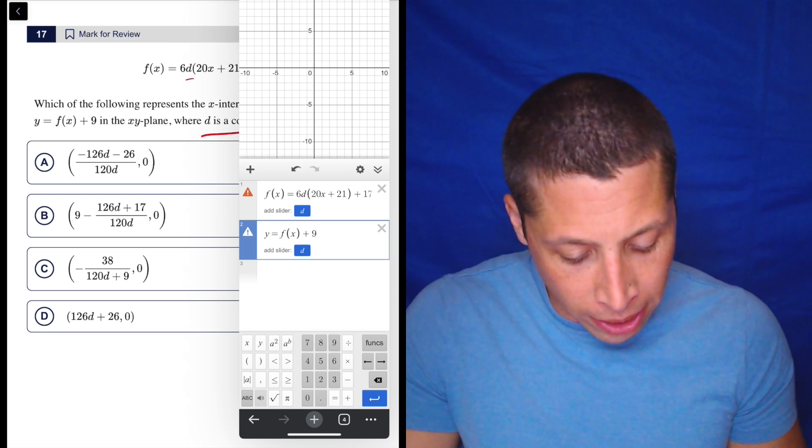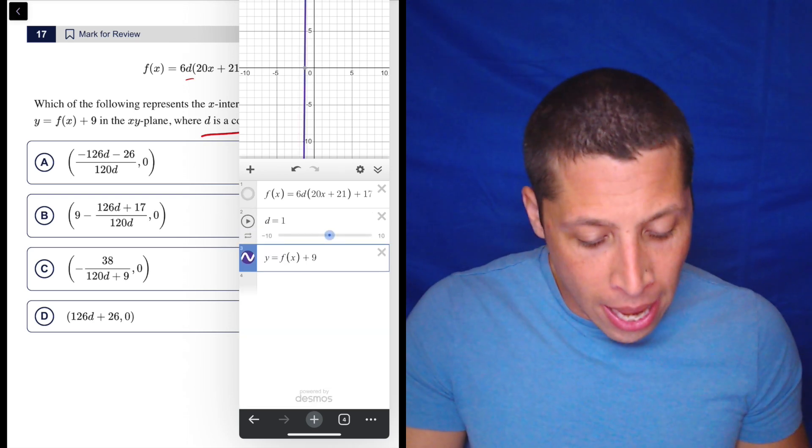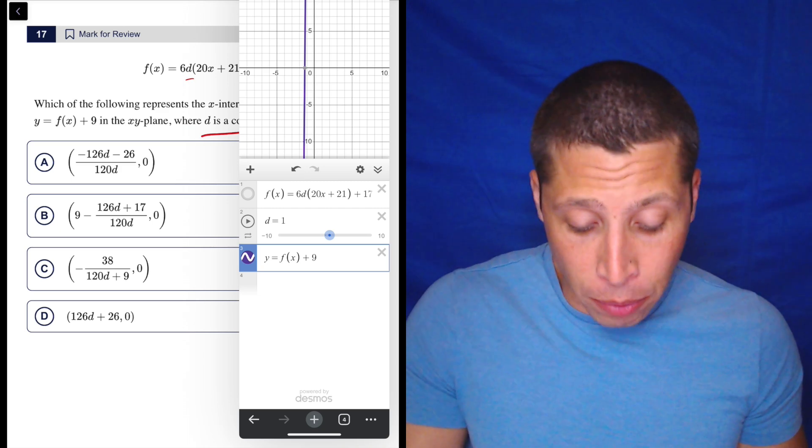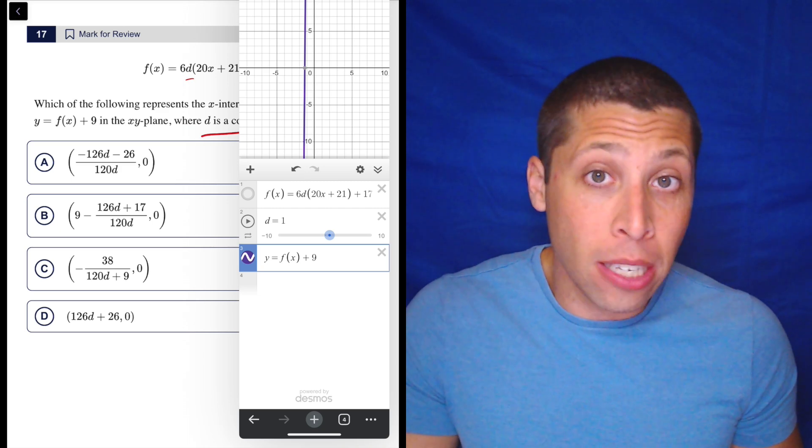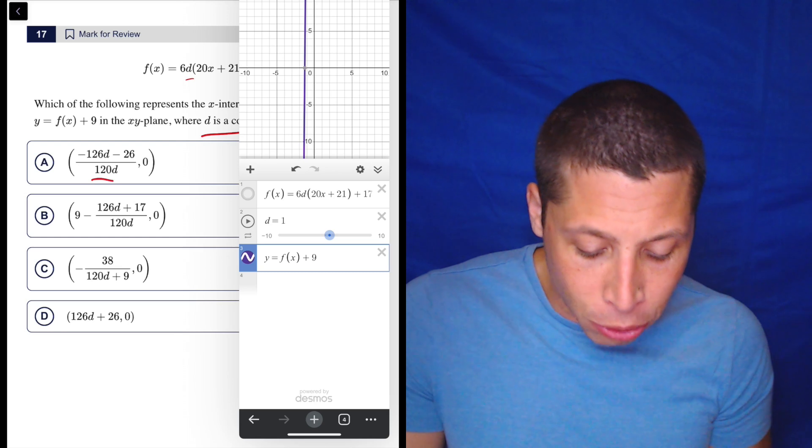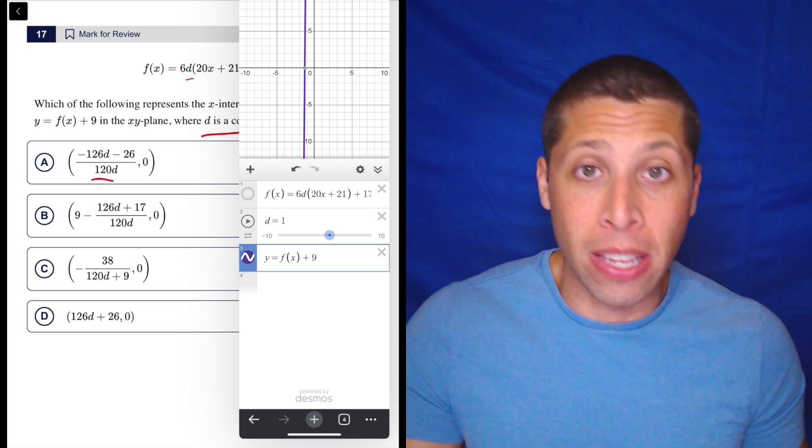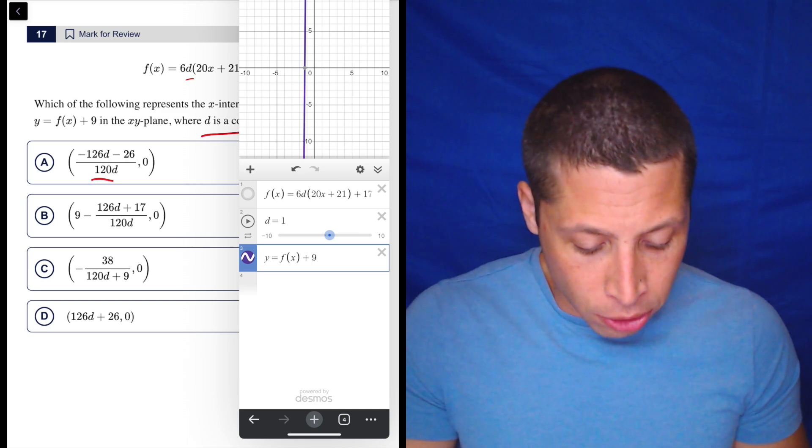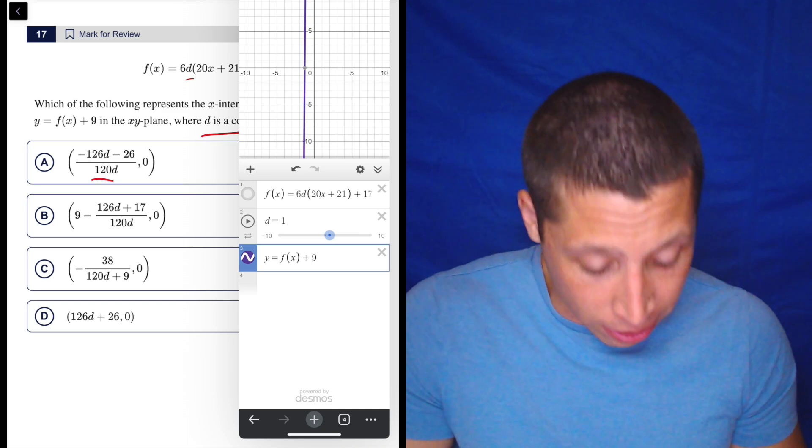So just hit the button. I'm going to hit D here, and it defaults to D equals one. Now, if I were doing this by hand, my initial thought would have been D equals zero. But if you look at these answer choices, that's not going to really work because then we have these undefined points. So I'll settle for D is one. That's fine.